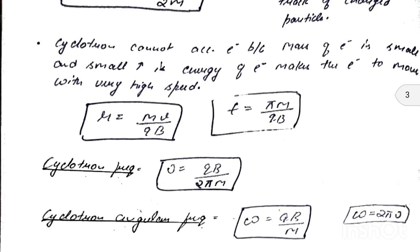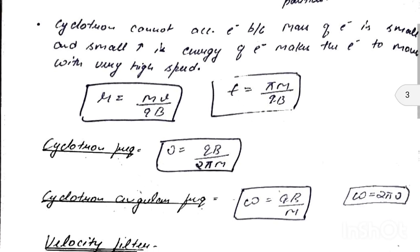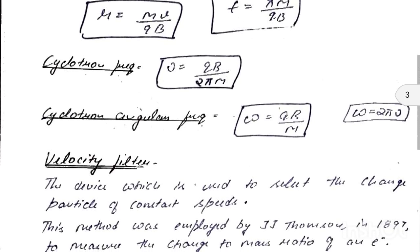The time to complete one full circular path is: T = πm / qB. The cyclotron frequency is: ν = qB / 2πm. The cyclotron angular frequency is: ω = qB / m, or equivalently ω = 2πν.